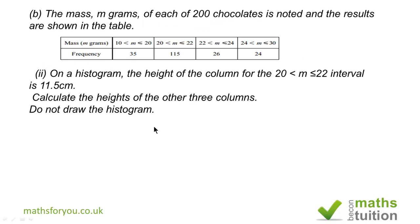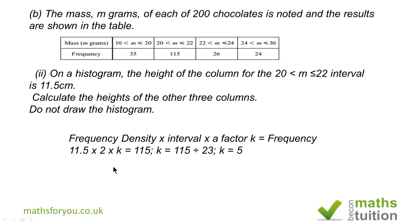Part B sub 2, we are given that the frequency density for that interval is 11.5 and the range is 2. Because we have no diagram, I tend to include a factor k which should be common to all the intervals. So 11.5 times 2 times the factor k is 115, so k is now 5.